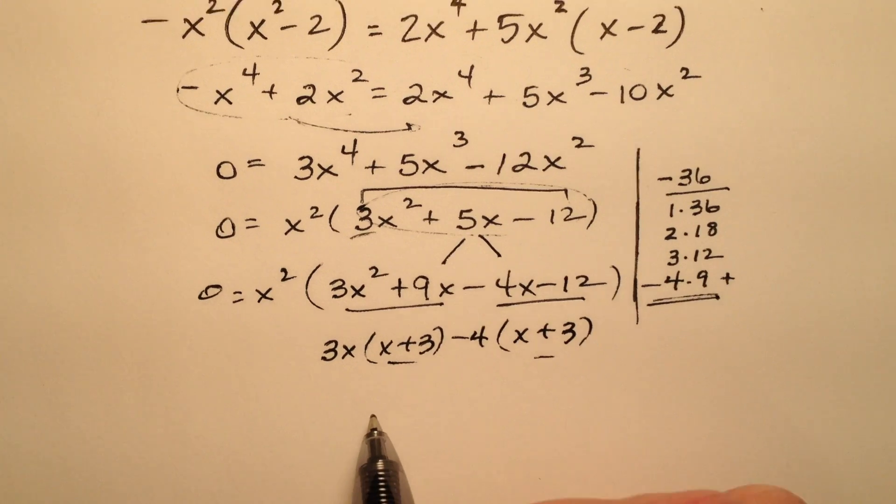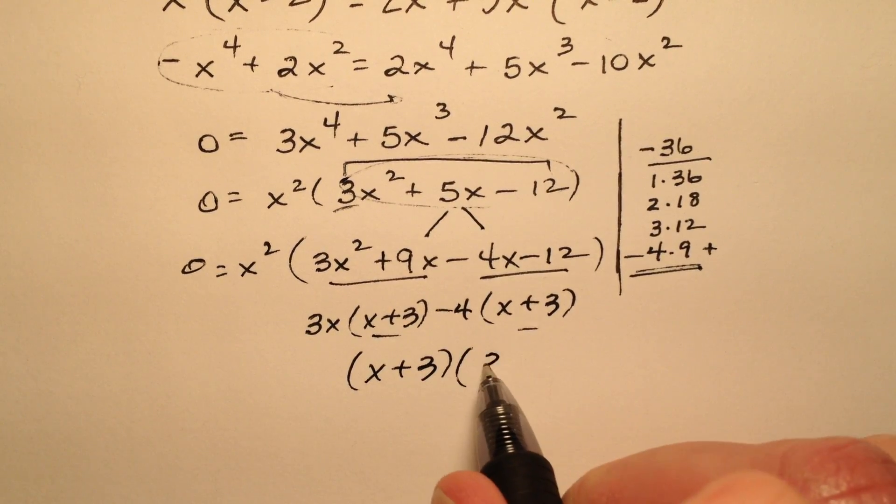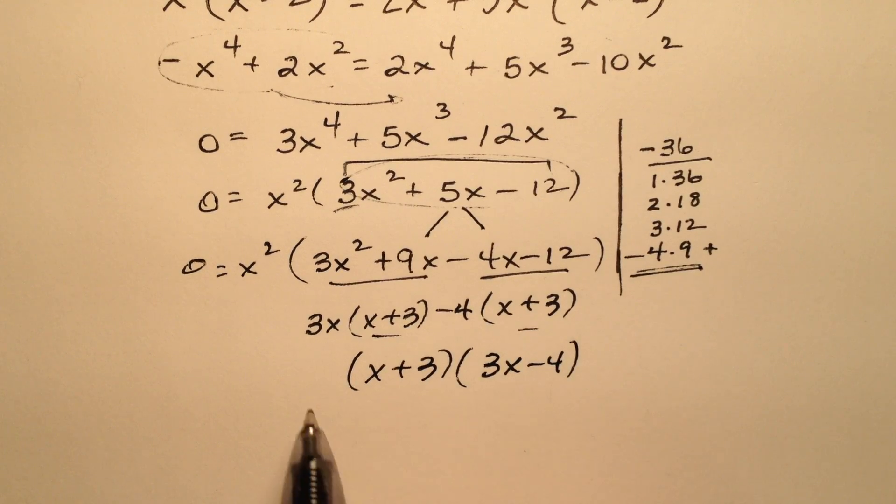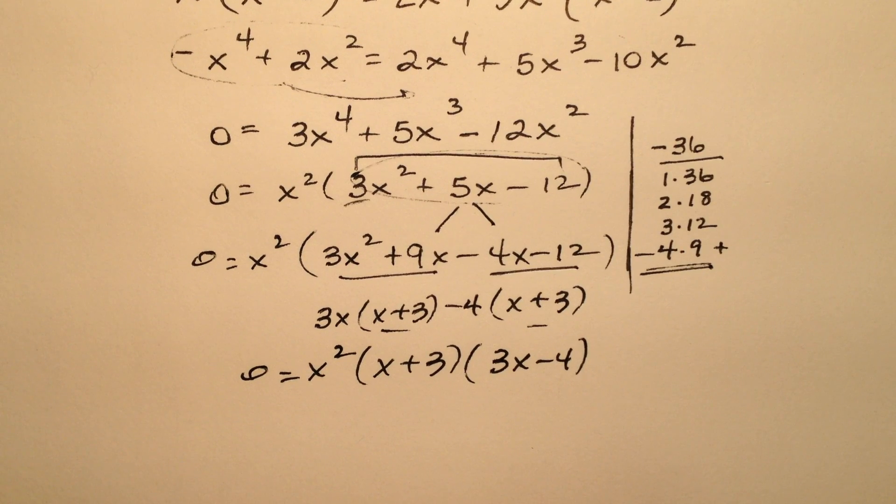My leftovers are the same. So I have x plus 3, 3x minus 4, and then the x squared that I pulled out as a greatest common factor at the beginning. I have three factors right here.